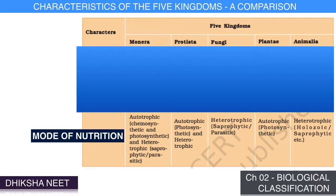Mode of nutrition: in Monera, both autotrophic and heterotrophic modes of nutrition are observed. In the autotrophic mode, both chemosynthetic and photosynthetic modes are observed, while in the heterotrophic mode, saprophytic or parasitic modes are found. In Protista, autotrophic and heterotrophic modes are observed; in the autotrophic mode, only photosynthetic mode is observed.